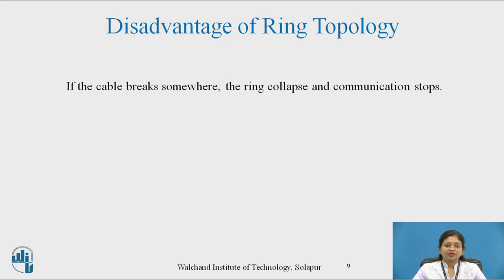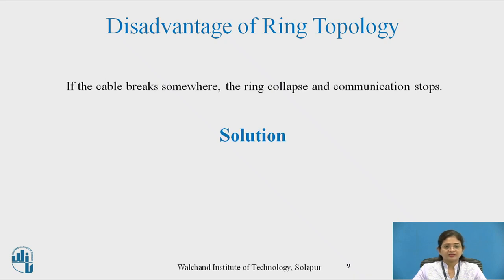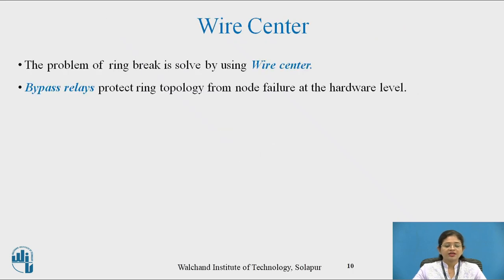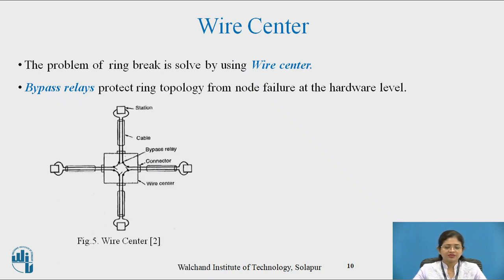A disadvantage of ring topology is that if the cable breaks somewhere, the ring collapses and communication stops. To eliminate this disadvantage, there is a solution called the wire center. With the help of a wire center we can eliminate this problem. The problem of ring breakage is solved by using a wire center through a bypass relay, which protects the ring topology from node failure at the hardware layer.